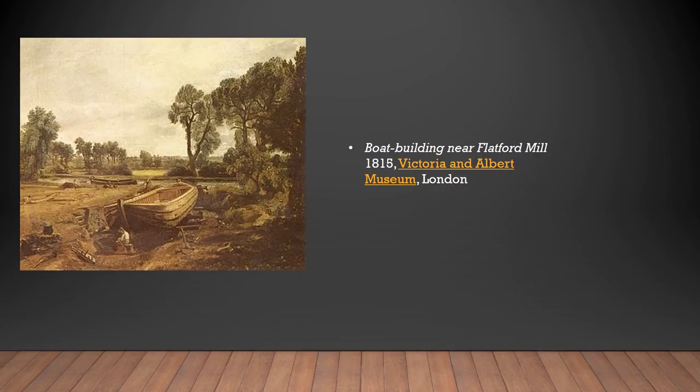In 1799, he enrolled as a probationary student at the Royal Academy in London. In 1802, John Constable wrote a letter to John Dunthorne in which he spelled out his determination to become a professional landscape painter. The letter said: "For the last two years I have been running after pictures and seeking the truth at second hand. I have not tried to represent nature with the same elevation of mind with which I set out, but have rather tried to make my performance look like the work of other men. There's room enough for a natural painter. The great vice of the present day is an attempt to do something beyond the truth." By 1803, he was exhibiting paintings at the Royal Academy.